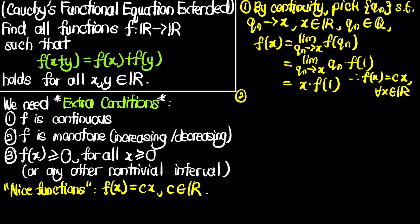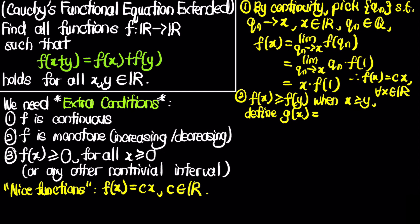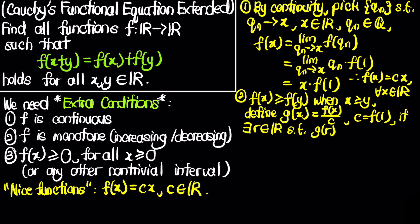For the second case, assume f is monotone increasing (the decreasing case is analogous). We define g(x) = f(x)/c where c = f(1), so g should be the identity function. If there exists a real number r such that g(r) ≠ r, we derive a contradiction. Without loss of generality, assume g(r) > r.